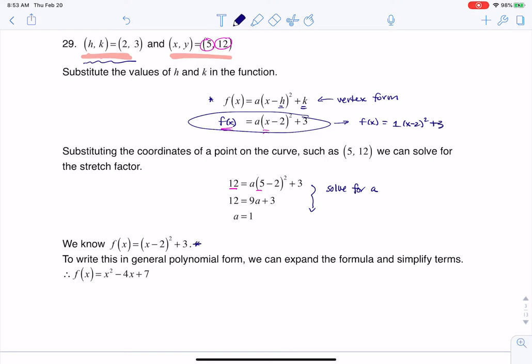And to get it into general form, that's fancy math talk for, hey, why don't you foil this out? So if I look at x minus 2 times x minus 2 and then plus 3, that would be x squared minus 4x plus 4 plus that 3. These are like terms, and that's where I'm arriving at this equation.